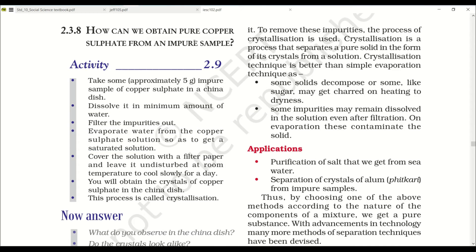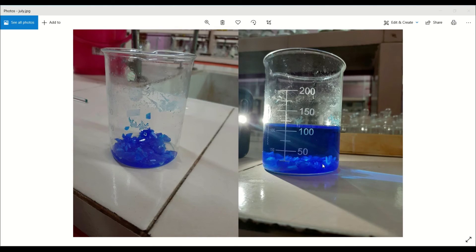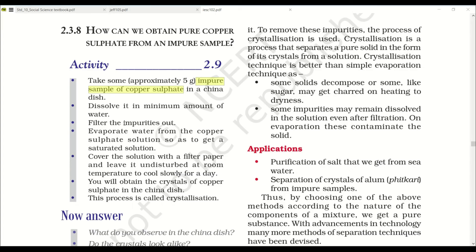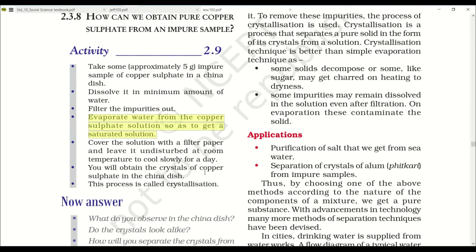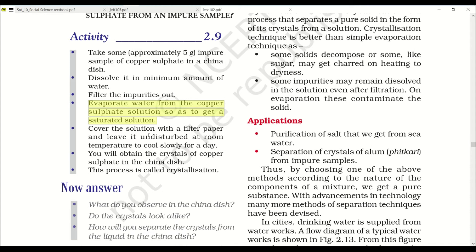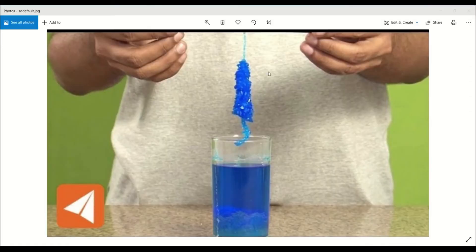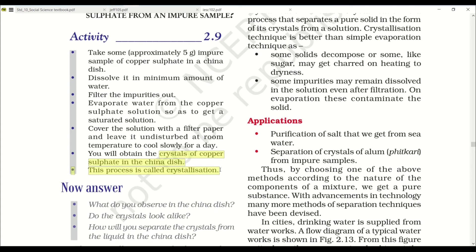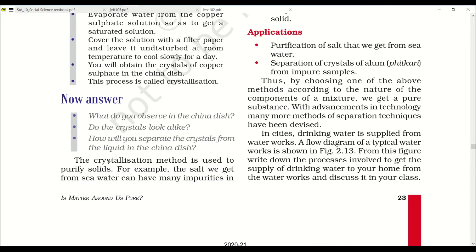How can we obtain pure copper sulphate from an impure sample? Take some impure copper sulphate. Dissolve it in minimum amount of water. Filter the impurities out. Evaporate water from copper sulphate solution so as to get a saturated solution. Cover the solution with a filter paper and leave it undisturbed at room temperature to cool slowly for a day. You will obtain the crystals of copper sulphate in a china dish. This process is called crystallization.